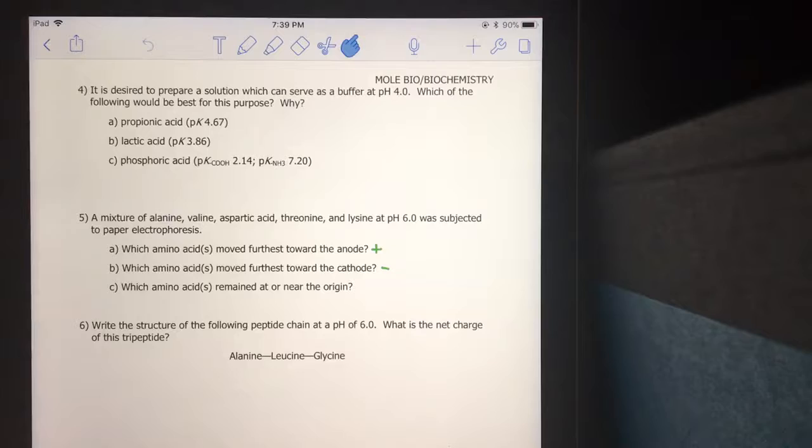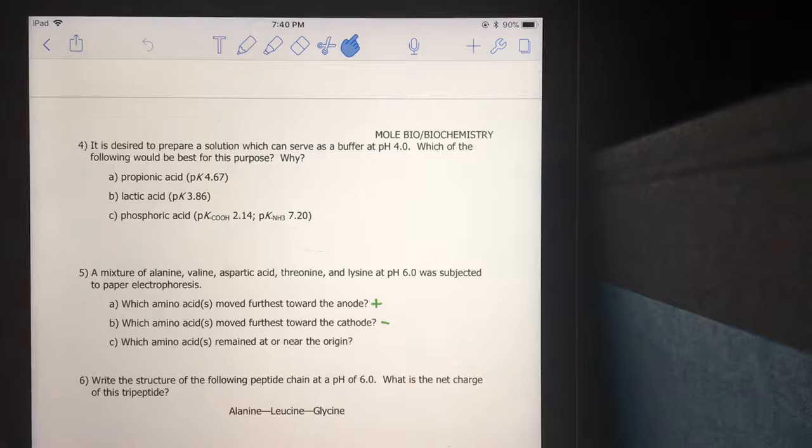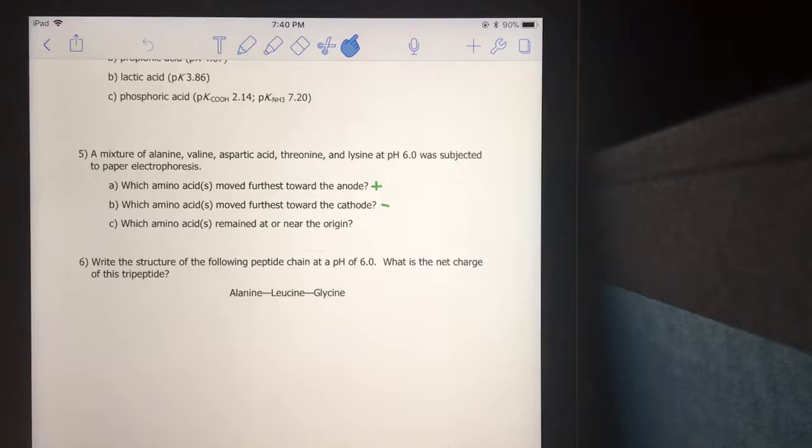Question four is the first I'm going to show here. Which solution can serve as a buffer at pH of four? It gives you the pKs of propionic acid, lactic acid, and phosphoric acid, which has two pK groups ionizable groups. So what I want you to do is try to find the isoelectric point of C and find out which of those is the best buffer.